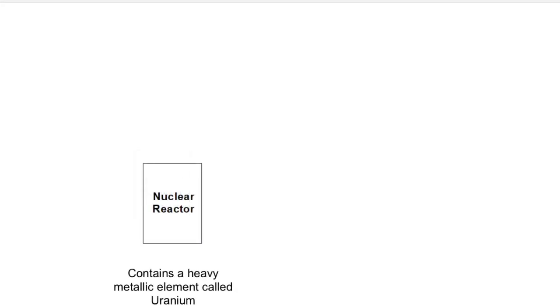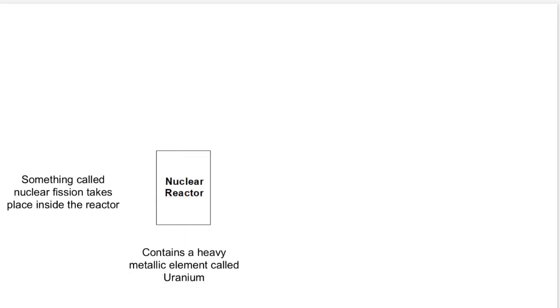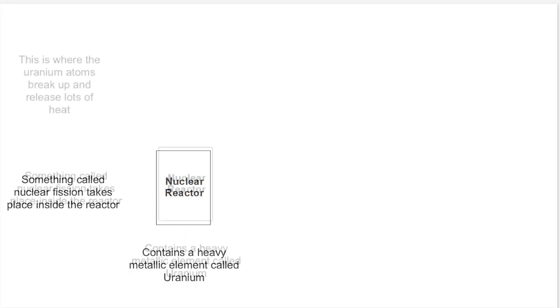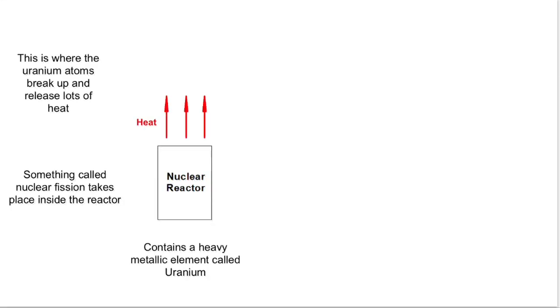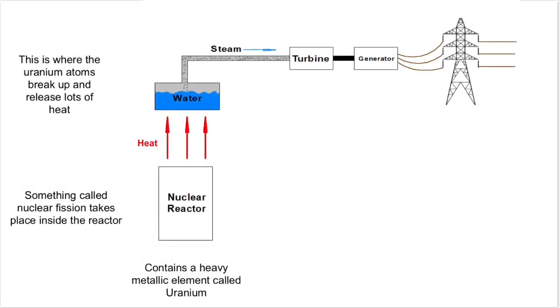So there you have a nuclear reactor. It contains a heavy metal called uranium, not the kind of heavy metal that your teacher listens to. Inside the nuclear reactor, this uranium breaks up, and it's a process called fission. This gives out a lot of heat. And this is where nuclear power stations start to look very similar to those other power stations that burn fuels, and this is because the heat that's produced heats up water that creates steam.